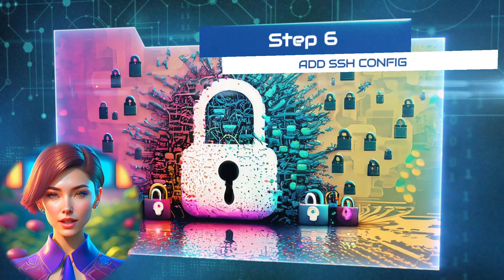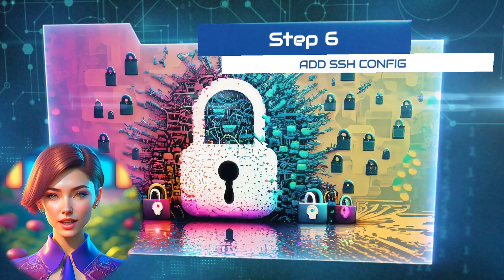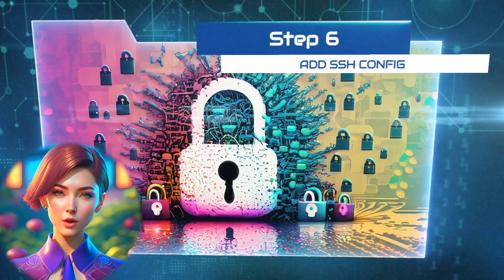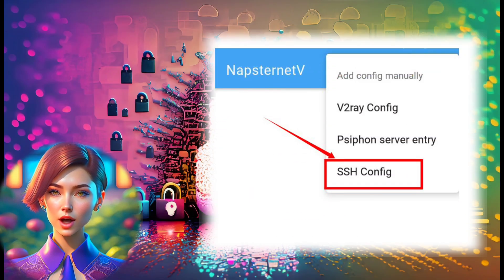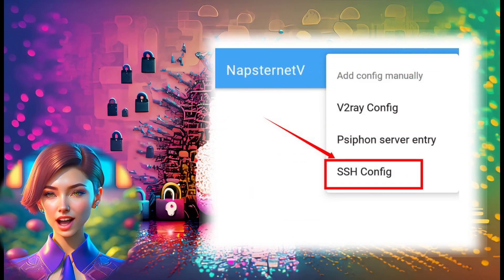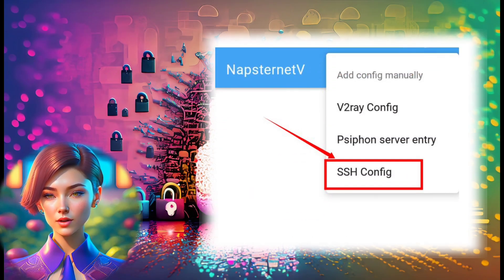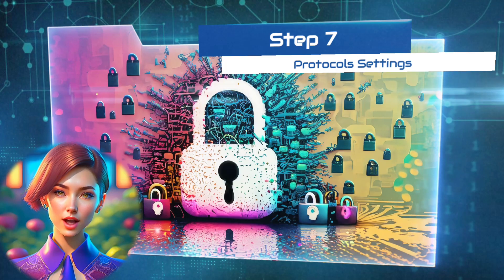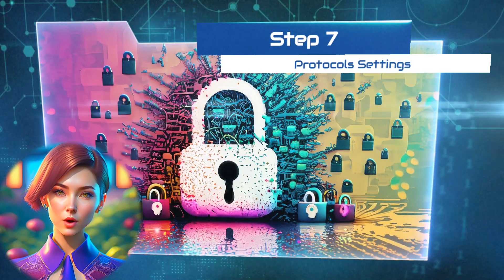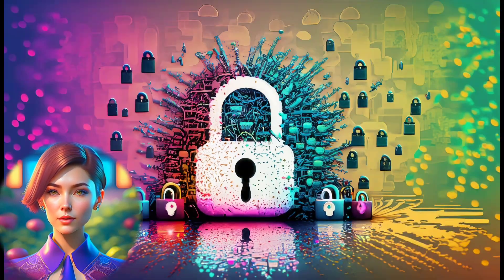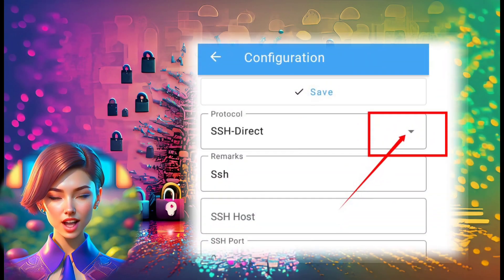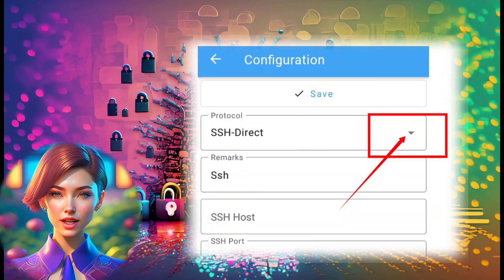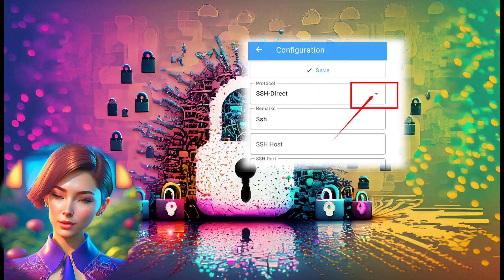Step 6: Choose SSH Configuration. In the new list that appears, click on SSH Config. Step 7: Expand SSH Protocol Settings. To select our desired SSH protocol, tap the down arrowhead icon to expand the settings.